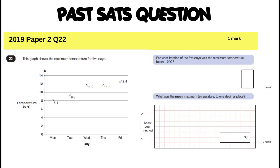This question combines a few different math skills. You can see straight away there's a graph, so this covers the statistics part of the national curriculum. There are two parts with separate marks: a one-mark part and a two-mark part, totalling three marks. The first part relates to fractions from the number curriculum, and the second part is calculating the mean from the statistics curriculum.